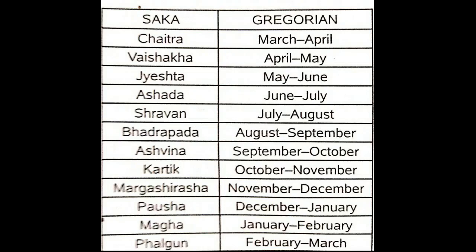Following are the months of the Shaka and the Gregorian: Choitro — March to April. Boishak — April to May. Joyishtho — May to June. Ashar — June to July. Shrabon — July to August. Bhadro — August to September. Ashin — September to October. Karthik — October to November.